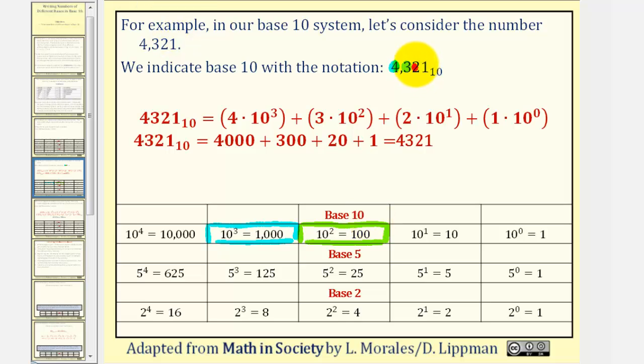The 2 represents 2 tens, but we can also write 10 as 10 to the first. And then finally the 1 represents 1 one, but we can write 1 as 10 to the zero. Notice how we can find the indicated place value by taking the base and raising it to an integer power.